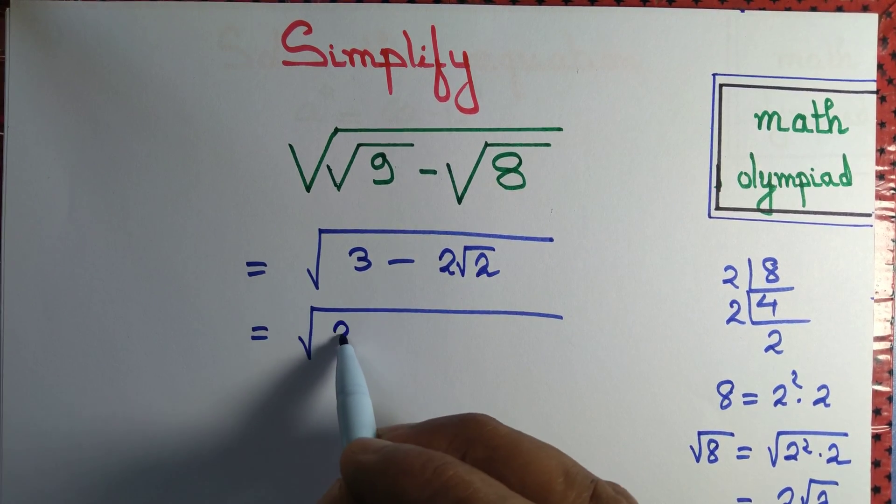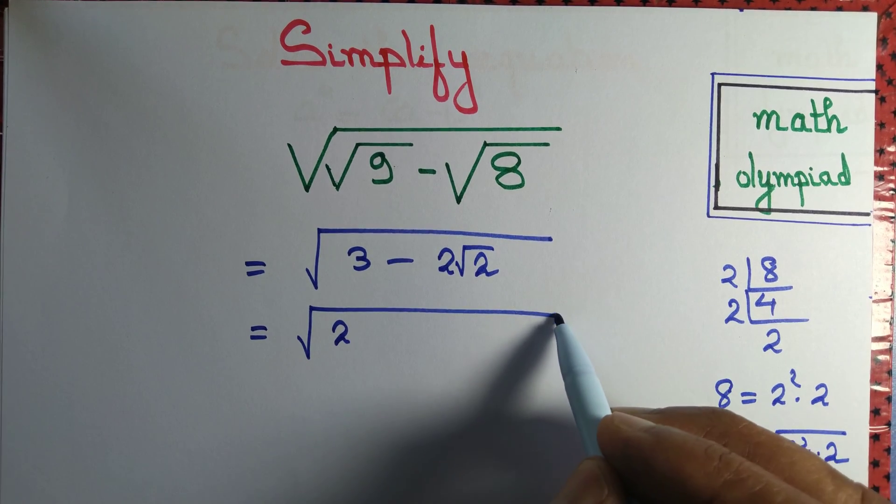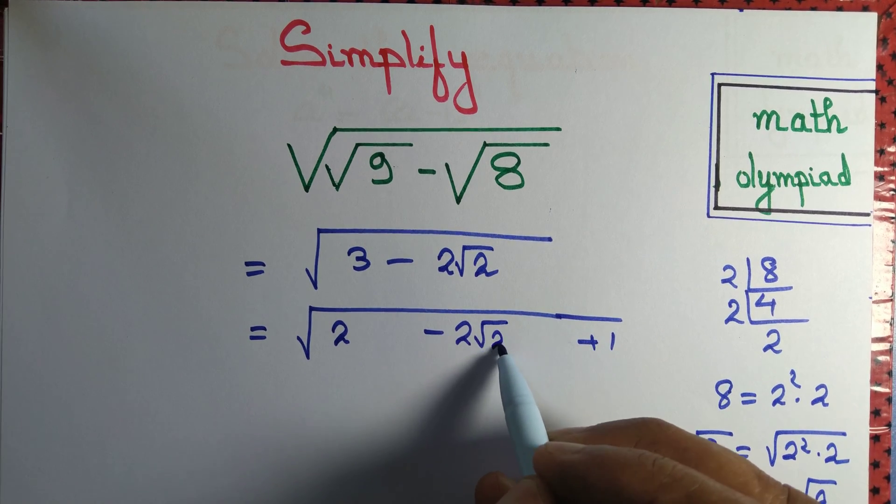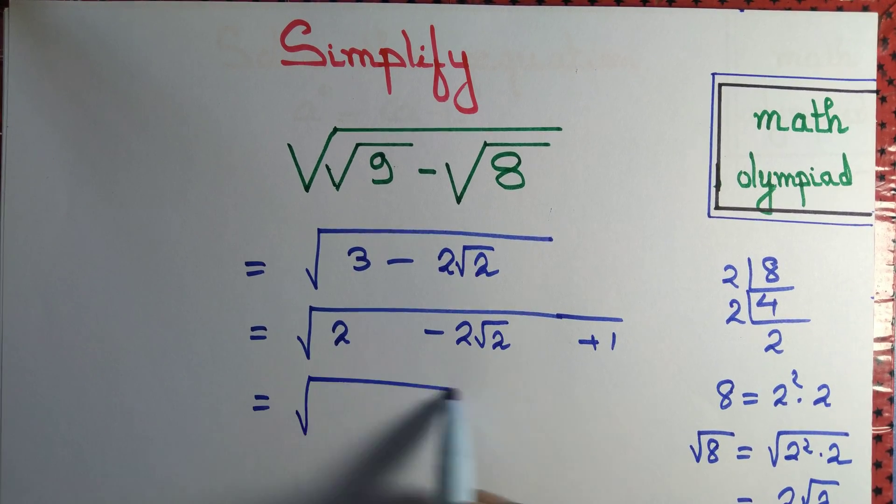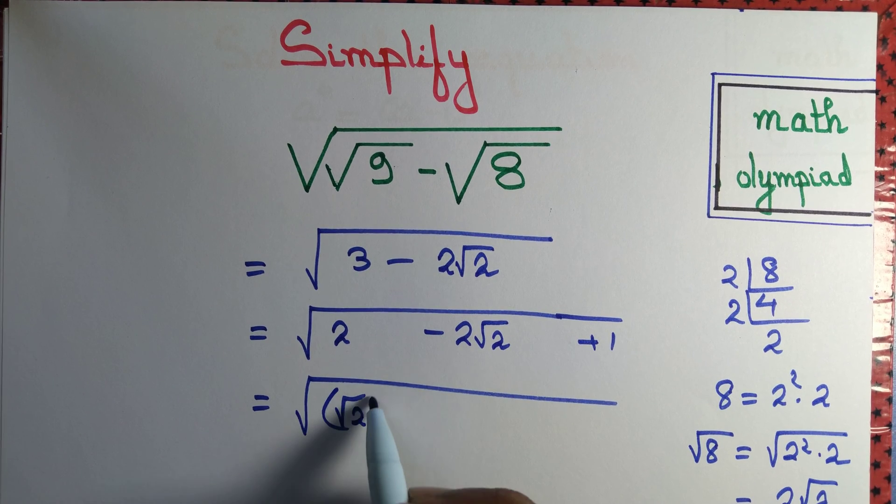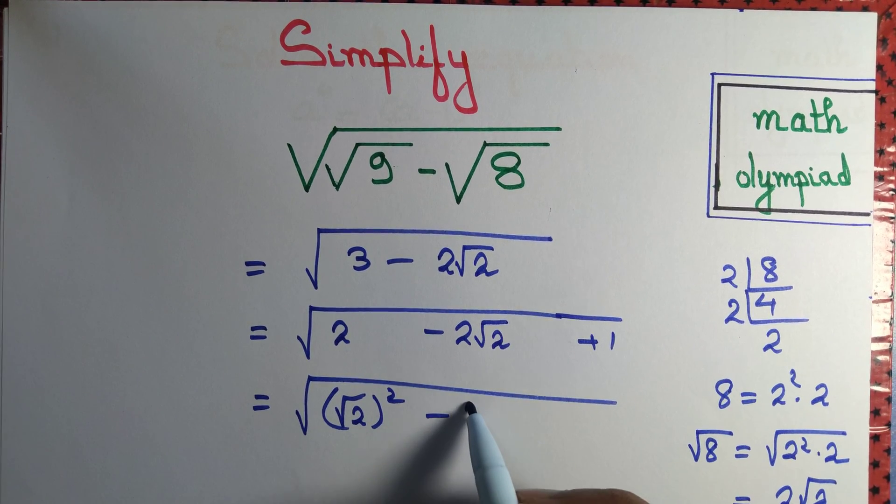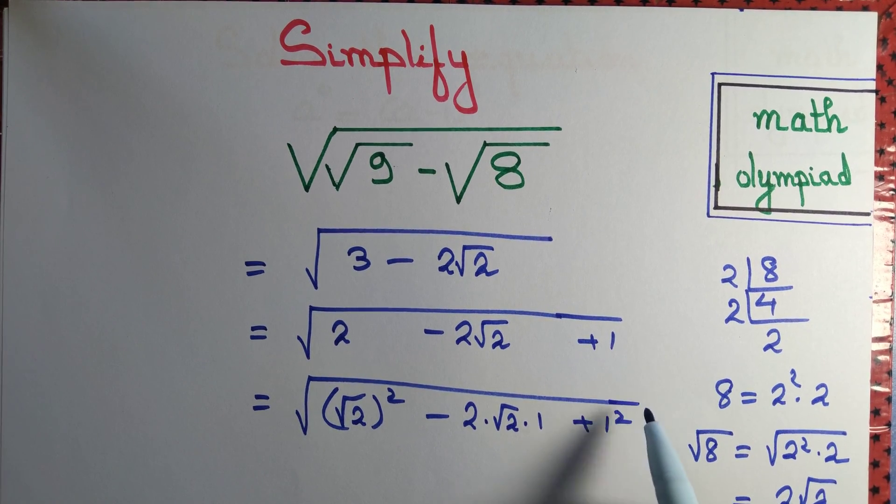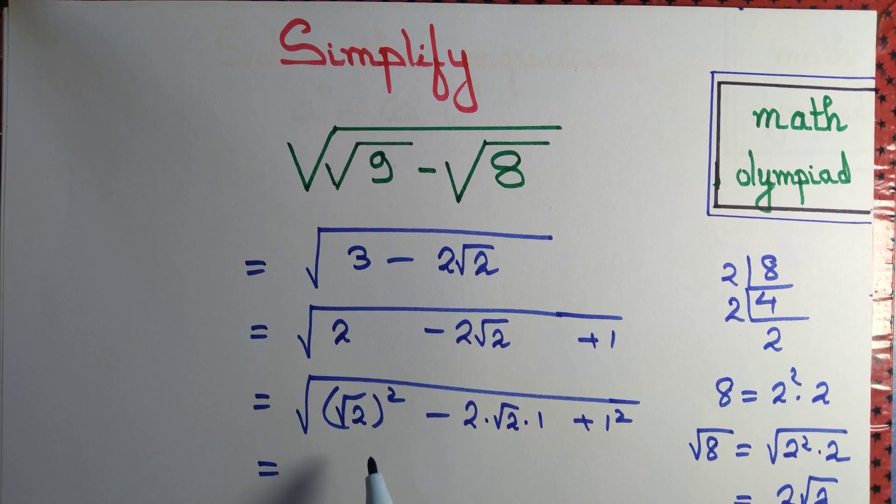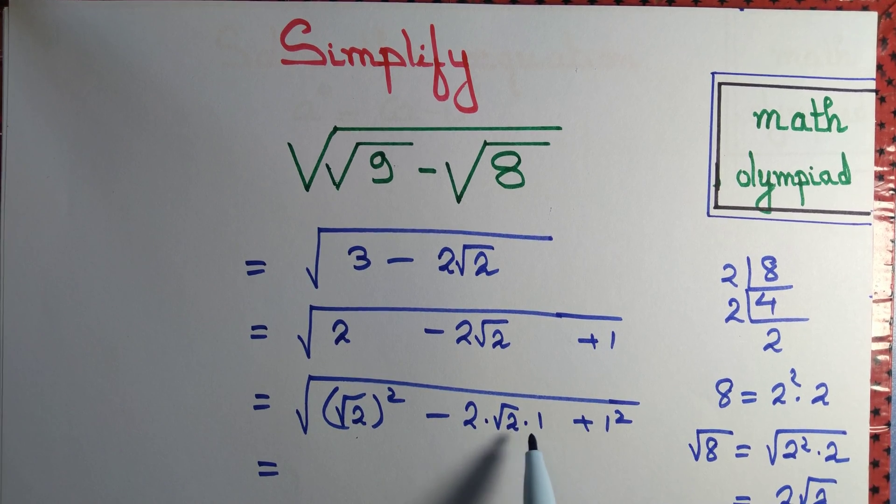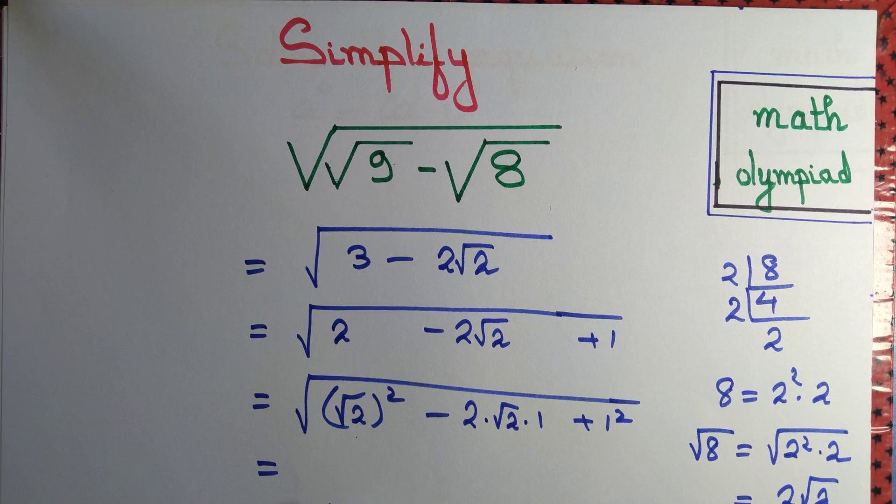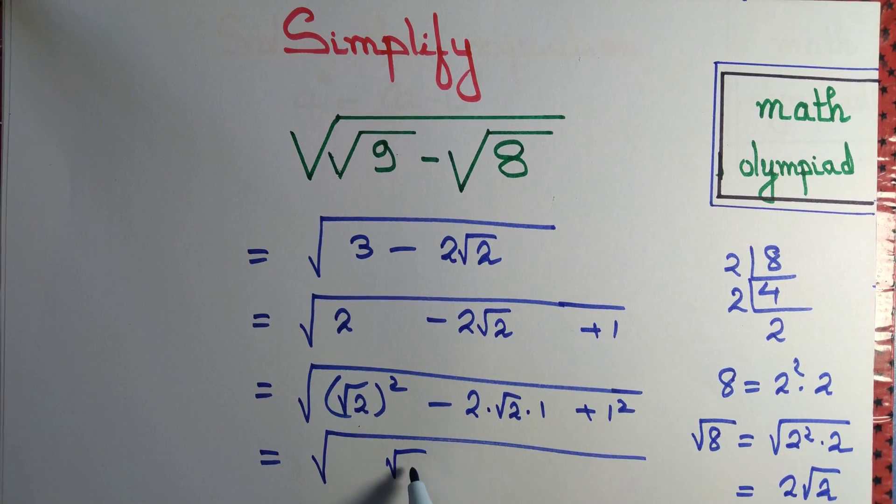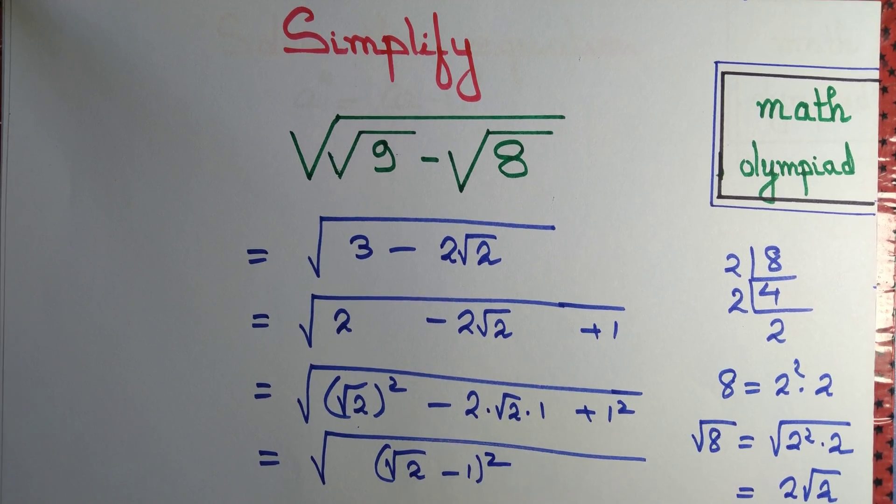3 can be written as 2 plus 1. Let me write 1 this side. Minus 2 root 2 as it is. And 2 can be written as root 2 whole square. Minus 2 root 2 into 1 plus 1 can be written as 1 square. Observe that this is the expression a square minus 2ab plus b square. So that can simply be written as a minus b whole thing square. Root 2 minus 1 whole thing square.